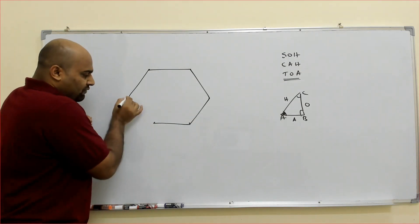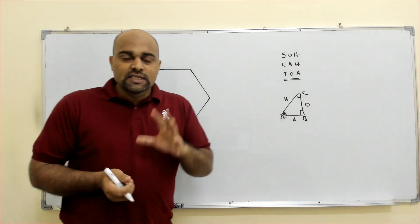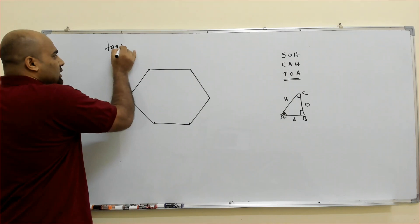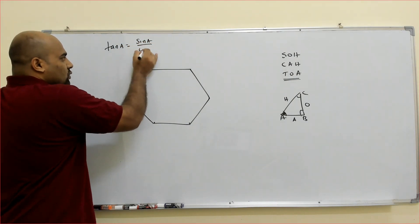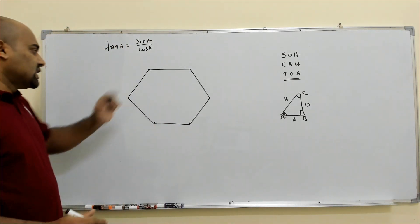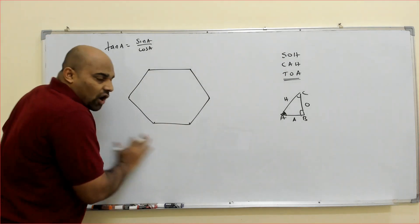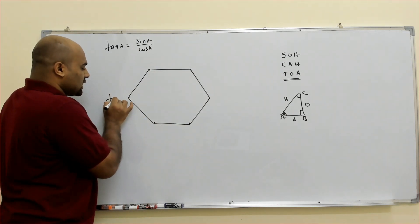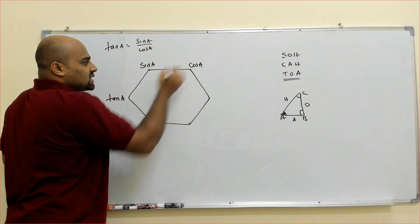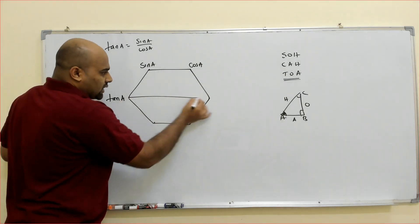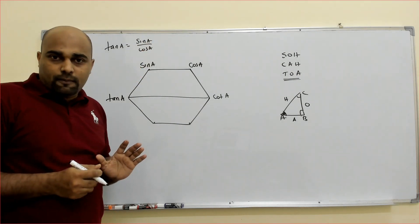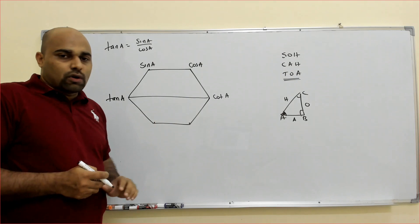Everyone should remember: sin A by cos A equals tan A. That result — don't forget. We already proved tan A = sin A / cos A. Also, cot A = cos A / sin A. I am going to mark this in the diagram. Opposite to tan, you write cot. tan A = sin A / cos A, and opposite to tan you write cot.